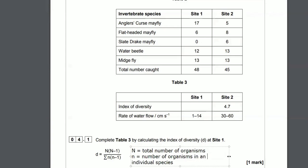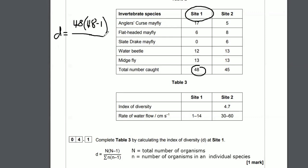Total number of organisms is big N. Little n is the number of organisms in an individual species, for example, 17, 6, 0, 12, 13, those are all the individual species. So what we need to do is big N multiplied by big N minus 1 over the sum of all the little n's multiplied by little n minus 1. So D equals 48 multiplied by 48 minus 1. Essentially, we're doing 48 times 47, and that equals 2,256. Now we need to do N times N minus 1. So we've got to do Site 1, 17 times 16, which is N minus 1, and then add that to 6 times 5, then 12 times 11, and 13 times 12. We don't need to use the 0. If we bash that in the calculator, we get 2,256 over 590.